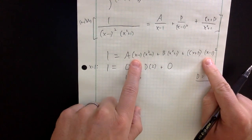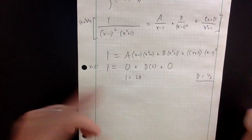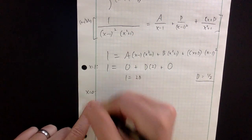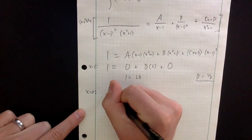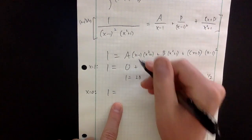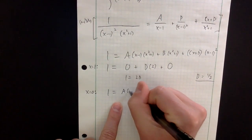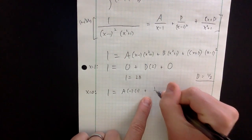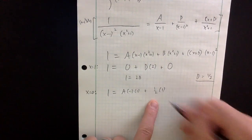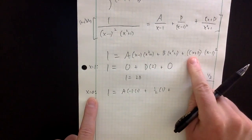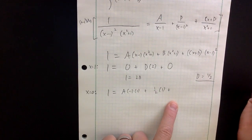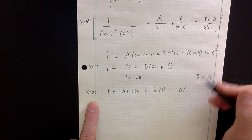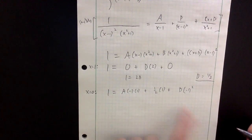That's the only substitution that completely deletes a term, so now I try other points. x equals 0 is a good choice — it makes computation easy. Plugging in 0: 1 equals A times (minus 1)(1) plus B times 1, and the C term disappears, leaving just D times (minus 1 squared), which is positive 1. So 1 equals minus A plus one half plus D.